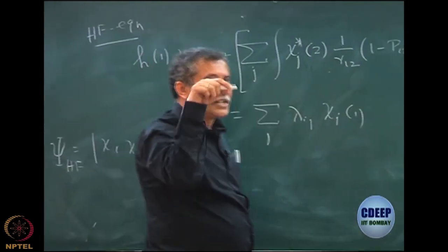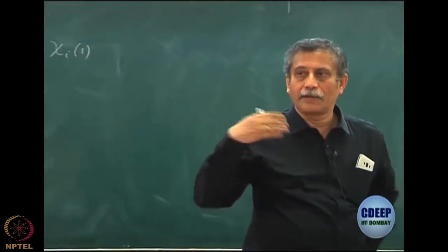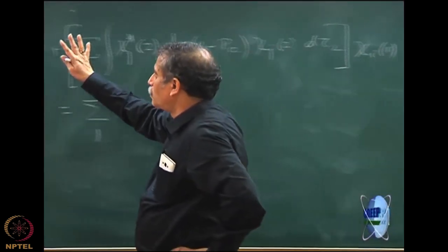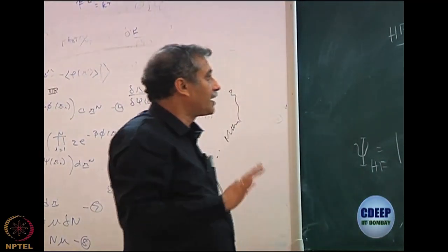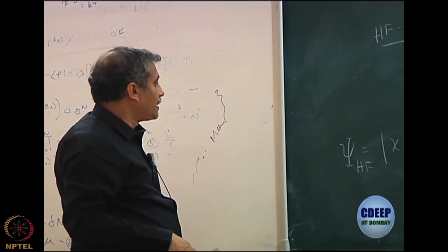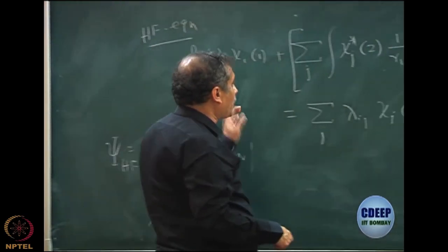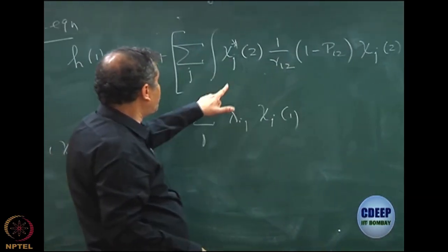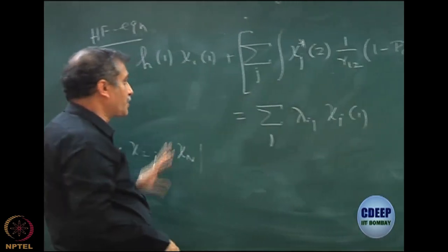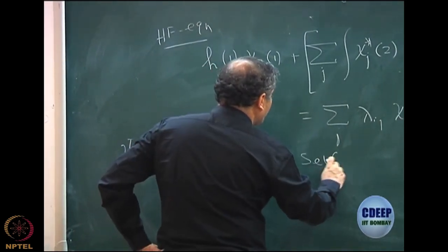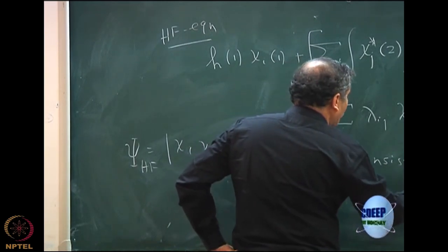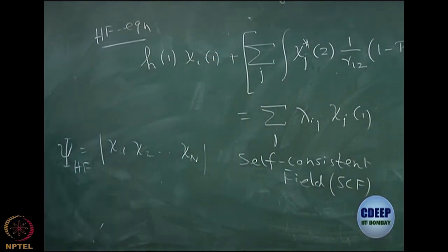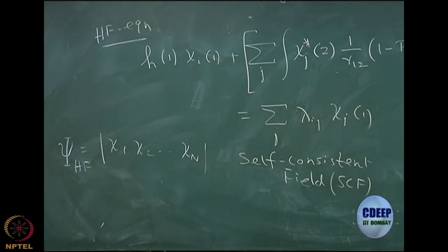Initially we used a tilde because it was the trial function. Now we will drop the tilde because these are no longer variational or trial spin orbitals — these are the spin orbitals which come out of the result of the variation. So now we will say these are the Hartree-Fock spin orbitals. One important thing is that the Hartree-Fock operator F includes the Coulomb and exchange terms which depend on the spin orbitals themselves. To solve this equation, you have to use the self-consistent field procedure — we discussed that last time.